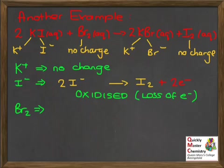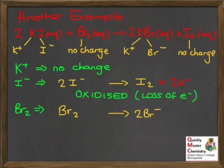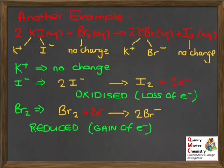Moving on to the bromine: Br₂, the other reactant, goes to bromide ions in potassium bromide — Br₂ makes two bromide ions, 2Br⁻. Going from neutral atoms to the 1⁻ ions, each bromine atom must gain one electron to fill its outer shell. With two bromine atoms, that's two electrons gained. We show this by writing plus two electrons on the left-hand side: Br₂ + 2e⁻ → 2Br⁻. That's reduction — gain of electrons.